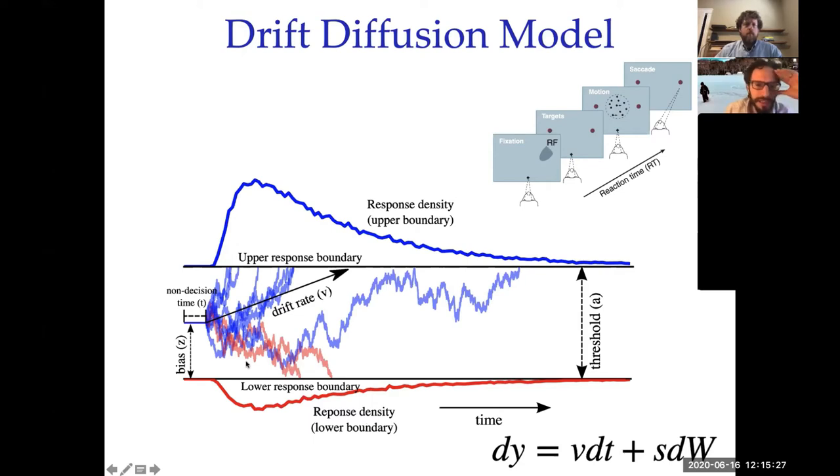So this model has a few free parameters. There's lots of variants of it, but one of them is the bias that you might have like a prior bias to think that you should make a right response versus left response. You have a non-decision time, which is a parameter that just takes care of the amount of time it takes to perceive stimuli and make a motor response that's not related to the decision process itself. And then the core decision parameters are the drift rate, which is how much evidence you have for one decision over another, and then the threshold, which is how far apart these boundaries are, and maybe I'll go through how those can be disentangled in a minute.